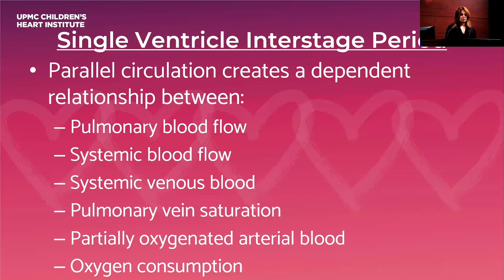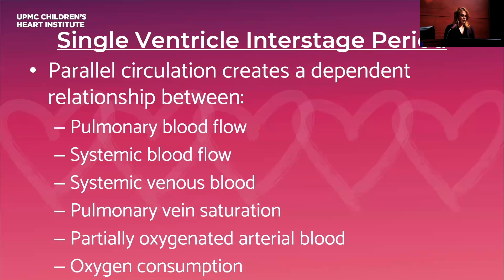This is because there is parallel circulation, which creates a dependent relationship between pulmonary and systemic blood flow. Arterial blood oxygenation depends on the balance between these two systems — the pulmonary vein saturation and the systemic venous saturation. Anything that affects this balance can critically affect oxygen delivery to tissue and lead to major adverse events.